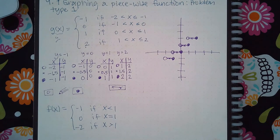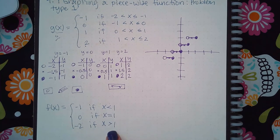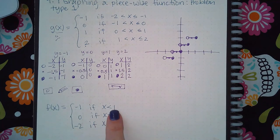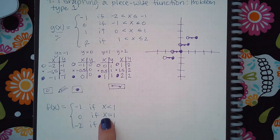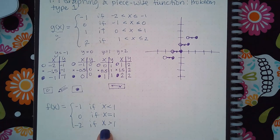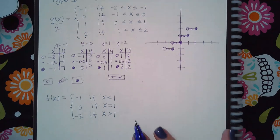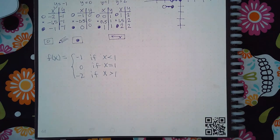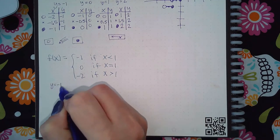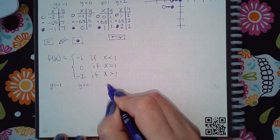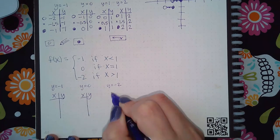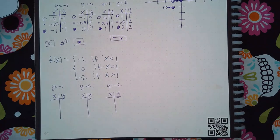Now here's another kind of problem in this same section, problem type 1. It still has constants, but the values are different — instead of starting and stopping at specific x values, one piece goes forever in one direction, one is just a single x value, and another goes forever in the other direction.